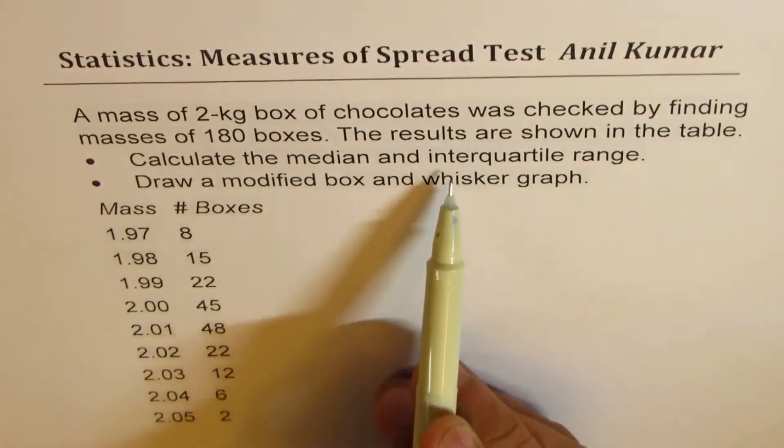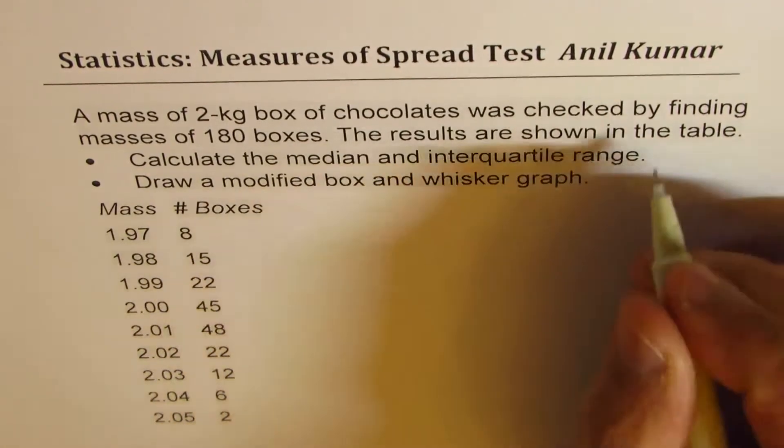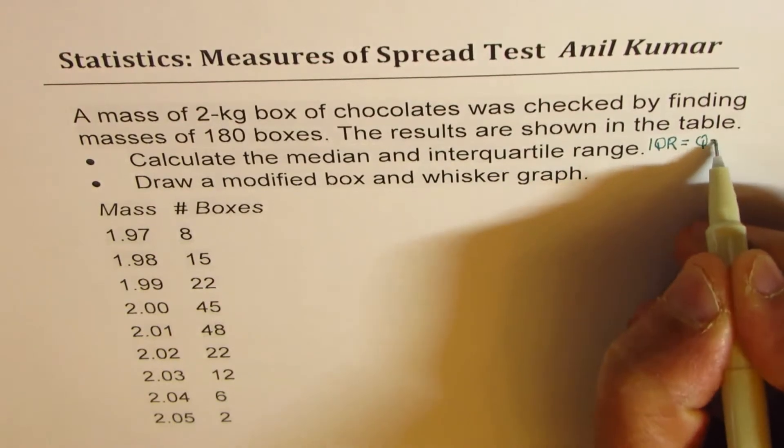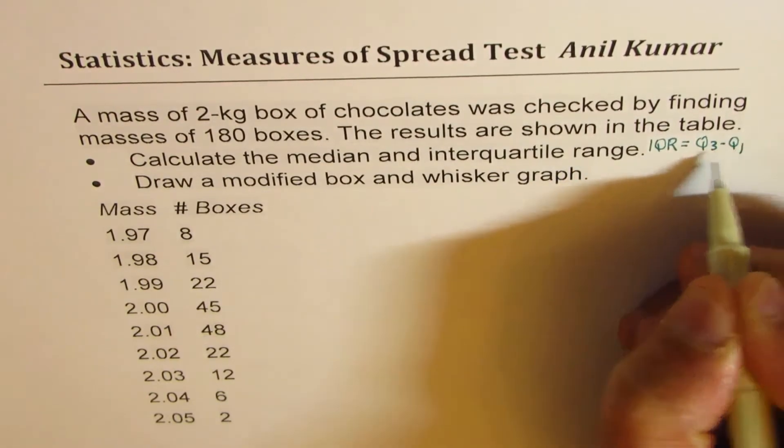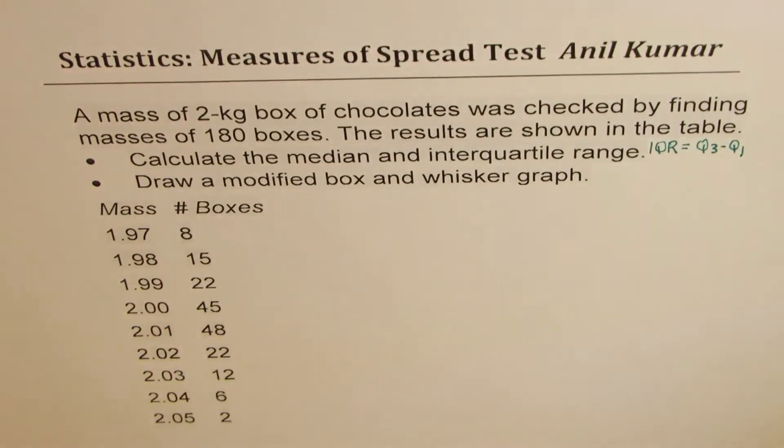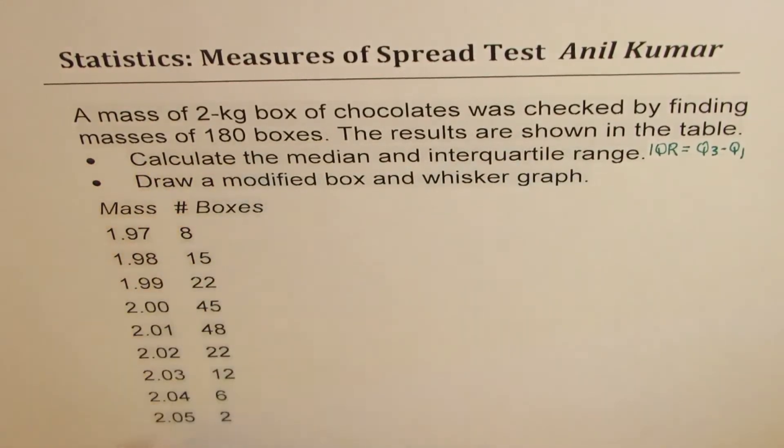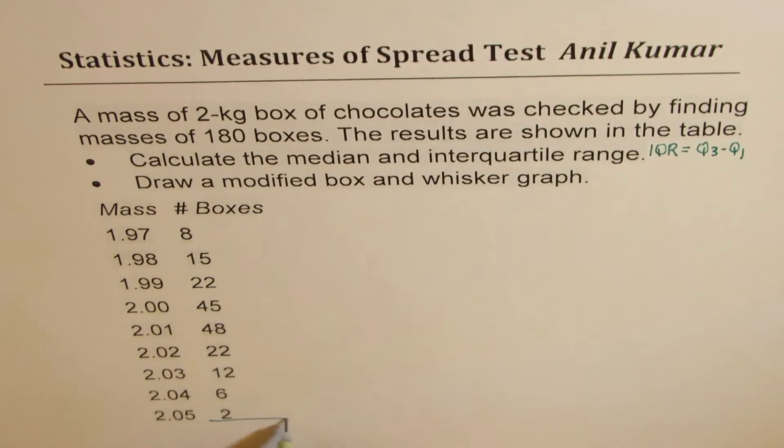So we need to calculate interquartile range. As you know, interquartile range is equal to Q3 minus Q1, so we have to calculate all the quartiles. Since we know that we are checking 180 boxes, if you total this up you should get 180.